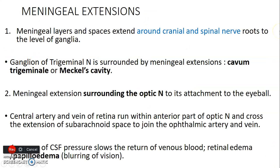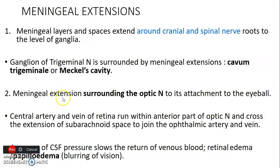There are two major meningeal extensions. First, the meninges extend around cranial and spinal nerve roots at the level of the ganglia. For example, the trigeminal ganglion — the ganglion of cranial nerve 5, which is a collection of neuronal cell bodies outside the CNS — is surrounded by meningeal extensions forming the cavum trigeminale, also called Meckel's cavity.